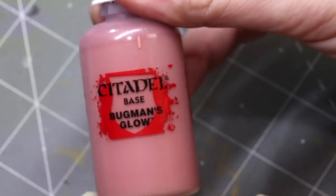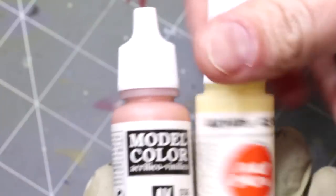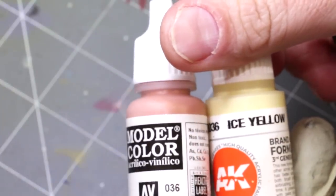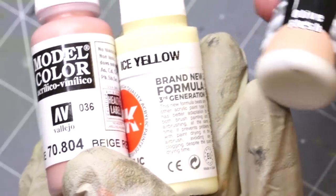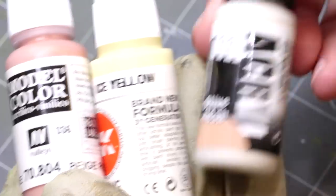Paint-wise, what we're going to use here we're going to start with some Bugman's Glow. In our highlight section we have some beige red from Vallejo, some ice yellow from the third generation AK Interactive.